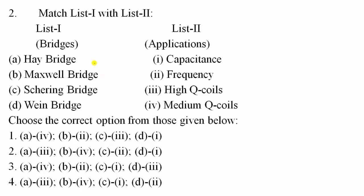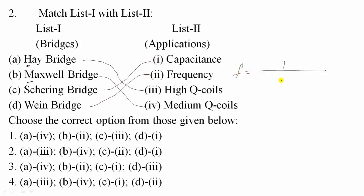Question 2: Match the following. Hay's bridge is for high quality coil measurement. Maxwell's bridge is for medium quality coil. Schering bridge is used for capacitance measurement. Wein bridge is for frequency measurement, with frequency given by 1/(2π√(R1·R2·C1·C2)). The corresponding correct option is option number four.